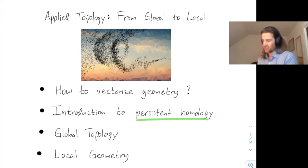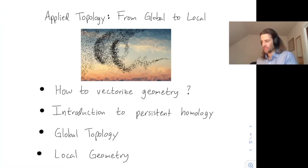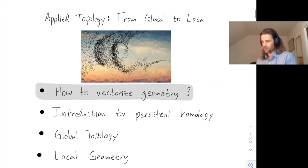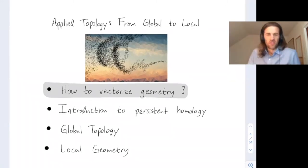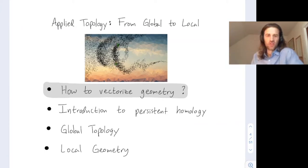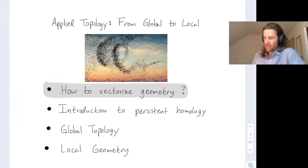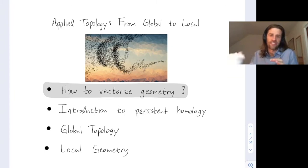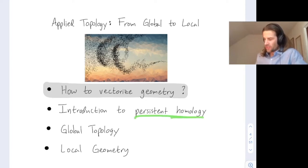I'll give an overview of some applications of persistent homology that measure global topology — these are the older applications that gave birth to our field. Now with machine learning being united with applied topology, persistent homology is much more used to measure local geometry in machine learning applications, and that's really expanded the growth of our area. Persistent homology comes from topology, but it measures not only global topology but also local geometry, and I think that's the main story behind some of its successes in machine learning.